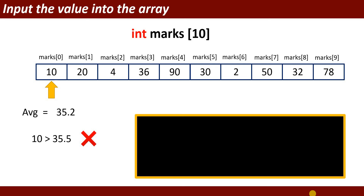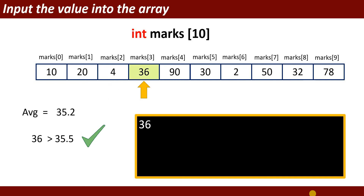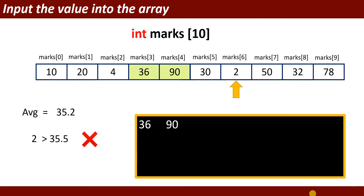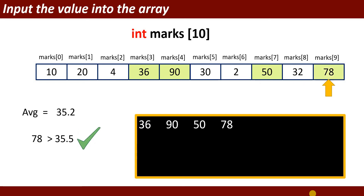After this, it will check all the elements in the array. It gets the first element and checks whether it is greater than the average. 10 is greater than 35.2 — No. 20 — No. 4 — No. 36 is greater than 35.2 — Yes, it will display this element. 90 — Yes. 30 — No. 2 — No. 50 — Yes. 32 — No. 78 is greater than 35.2 — Yes, this element also displays on the output screen.